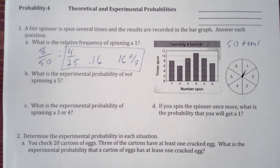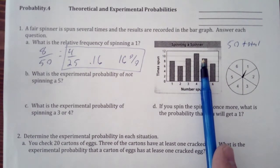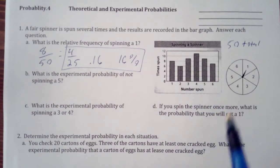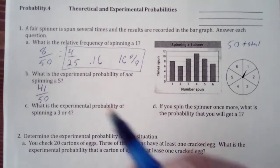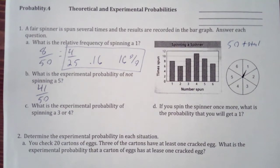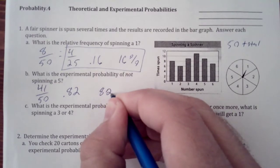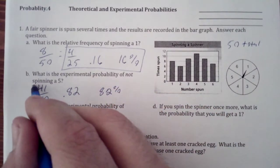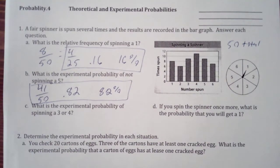What is the experimental probability of not spinning a 5? So we look at 5, there are 9 times that we spun a 5, so we have 41 of not spinning a 5, and that is 0.82 or 82%. So all four of those would work as possible answers, just one of them, not all of them.